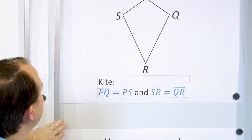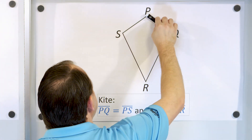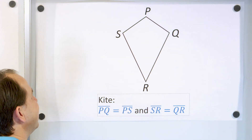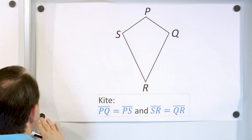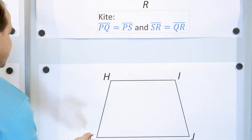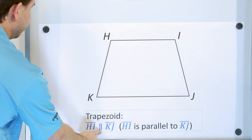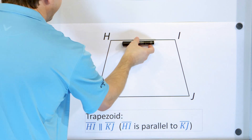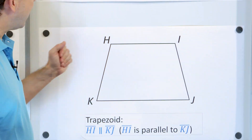A kite is when you have adjacent sides that are congruent, meaning equal in length — this side is congruent to this one, and this one is congruent to this one. And then you have a trapezoid. A trapezoid is when you have two opposite sides parallel — HI parallel to KJ — but the other sides are not parallel. Because if they were also parallel, it would be a parallelogram. Since you only have one pair of parallel sides instead of two pairs, we call it a trapezoid.